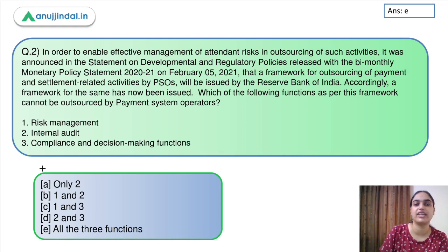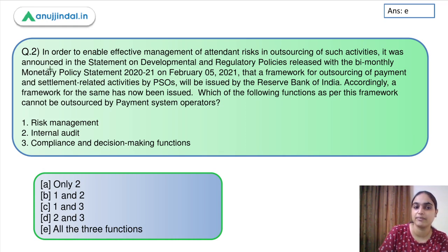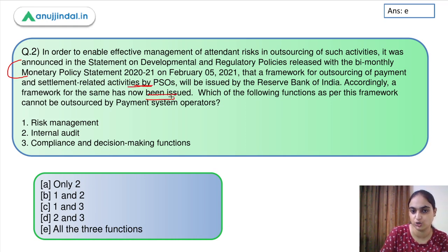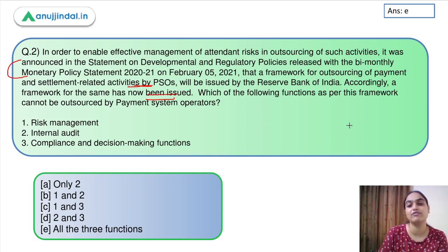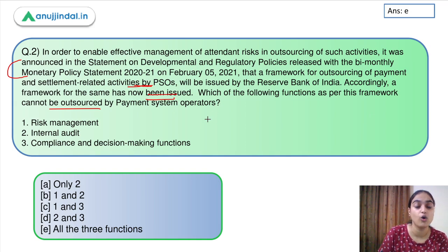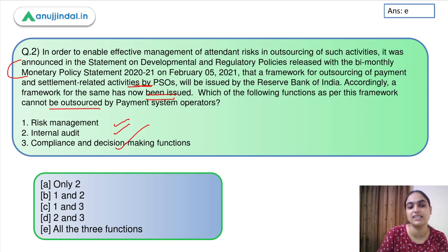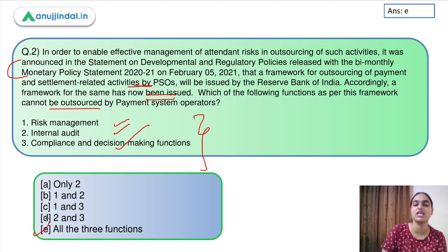Question number 2: In order to ensure effective management of risk and outsourcing, the framework was suggested along with the monetary policy statement and has now been issued. You have to identify which of the following functions cannot be outsourced. We discussed the three core management functions: risk management, internal audit, and compliance and decision-making. All three cannot be outsourced, so the answer is option E.